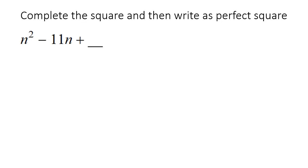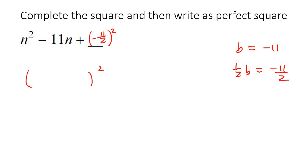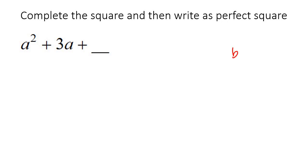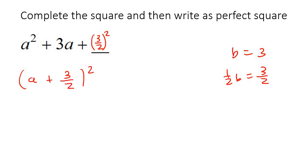Here's another one. Although this one is actually going to have a bit of a fraction. So if we say that b is negative 11, half of that would be negative 11 over 2. Open up your bracket to the power of 2 and then say n minus 11 over 2. Here's another one — your b value is 3, so half of that would be 3 over 2. You're just going to say 3 over 2 squared, then open up a bracket and say a plus 3 over 2.